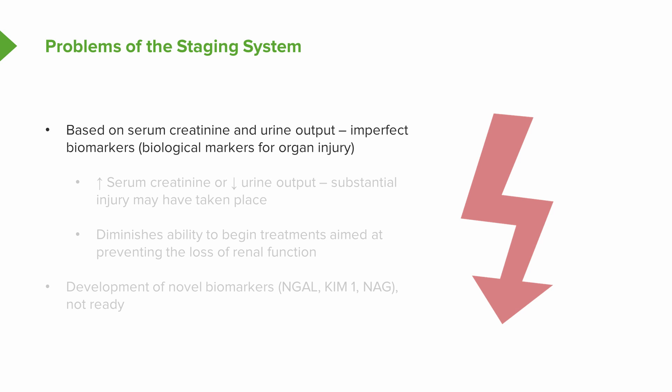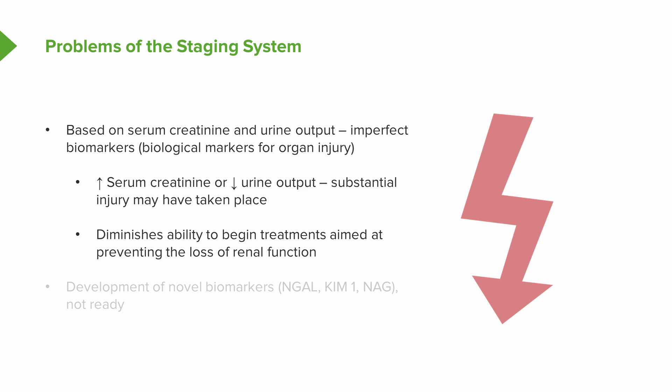Despite having a consensus for defining and grading AKI, it's still based on serum creatinine and urine output, and these are really imperfect biomarkers — biological markers for organ injury. By the time serum creatinine rises or urine output decreases, substantial injury has already taken place, diminishing our ability to begin treatments aimed at preventing loss of renal function. Although novel biomarkers have been developed — things like NGAL, kidney injury molecule-1, or NAG — they're not ready for prime time and are not being used commercially in the US at this time.